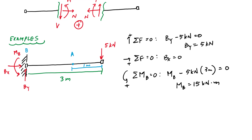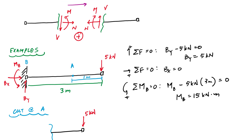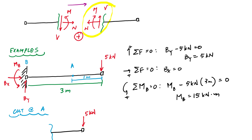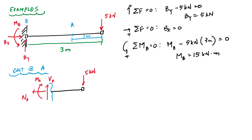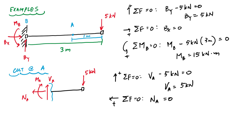To get the internal load at A, I make a cut through point A. I'll draw the right side of the cut. This is what my free body diagram looks like and I'm going to assume internally positive, so at the face of the cut I'll draw NA, VA, and MA. Applying equilibrium: sum of forces in the vertical gives VA minus five equals zero, so the shear VA is five kilonewtons. Sum of forces in the horizontal tells me the normal force is zero.